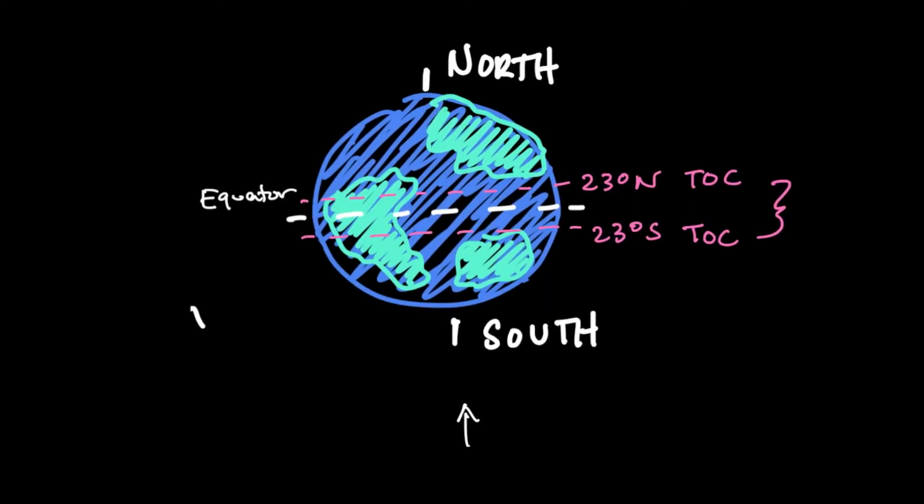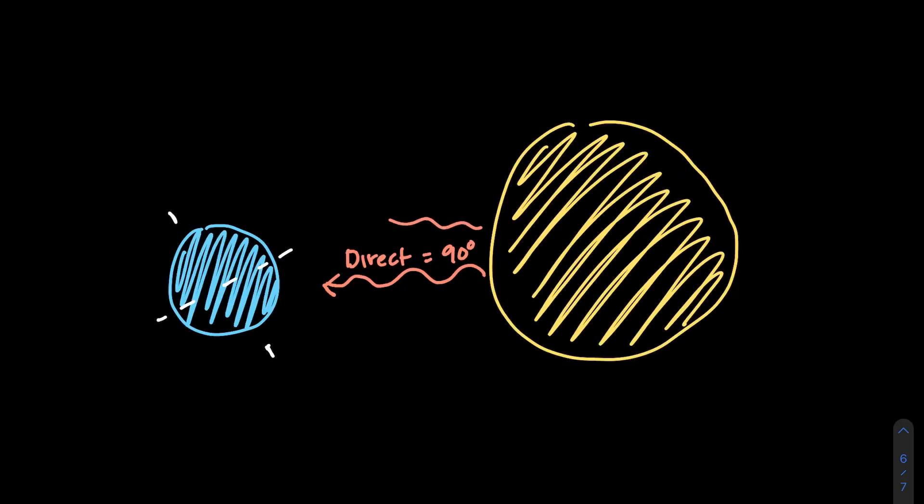Throughout most of the year, this is the case for the tropics. So surrounding the equator, we have the Tropic of Cancer, which is at about 23 degrees north, and the Tropic of Capricorn, which is at about 23 degrees south. That's where we're getting most of our direct sunlight.